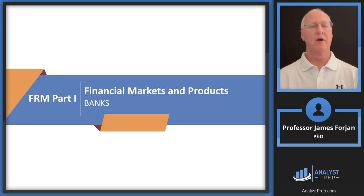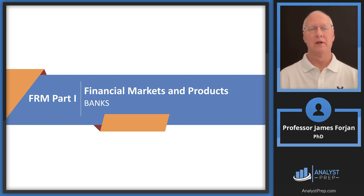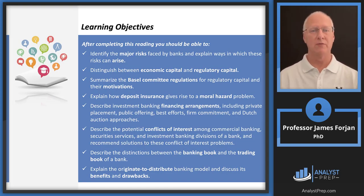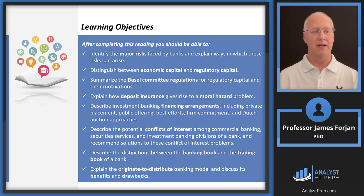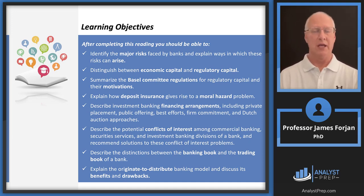Hey, it's Jim and this is FRM Part 1, the topic on financial markets and products and the chapter on banks. Welcome to this first chapter on banks inside of this topic. Note that there are 20 chapters here in Part 1 under financial markets and products and what you'll see as we go through these learning objectives is a lot of action words that sound like describe, explain, distinguish, and identify. I want you to think about not just this particular chapter but the next 20 chapters — GARP is laying the foundation here in Part 1.